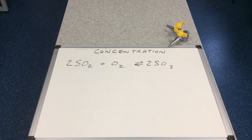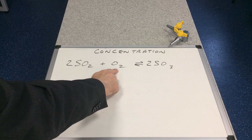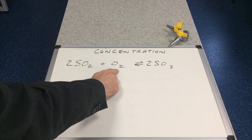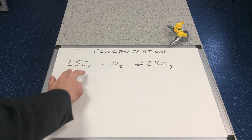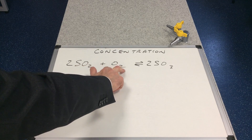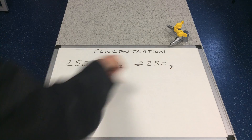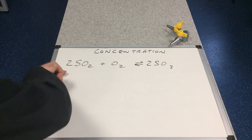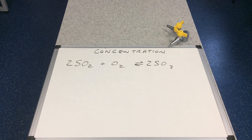The same applies if we increase the amount of oxygen. If we increase the concentration of this reactant, the equilibrium will be disrupted. It wants to get back to equilibrium, so the SO₂ will try to get rid of that extra oxygen by reacting with it more. The forward reaction proceeds more and therefore the equilibrium position shifts over to the right hand side.